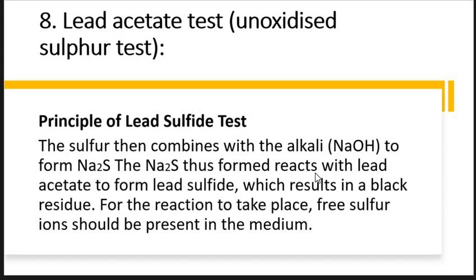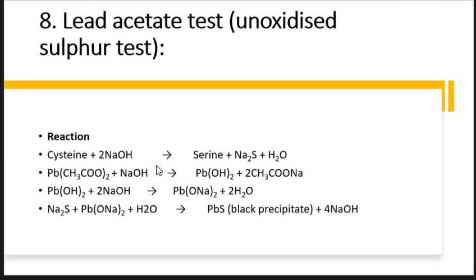This sodium sulfide then reacts with lead acetate to form lead sulfide. This is the summary of the chemical reaction. Sodium hydroxide reacts with lead acetate to form lead hydroxide and sodium acetate. Lead hydroxide then reacts further with sodium sulfide to give the black precipitate of lead sulfide.